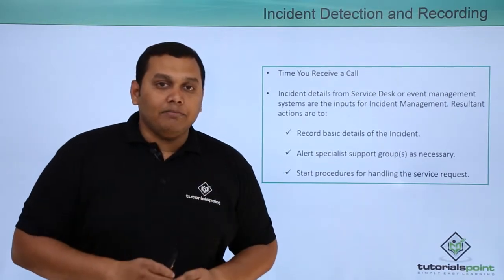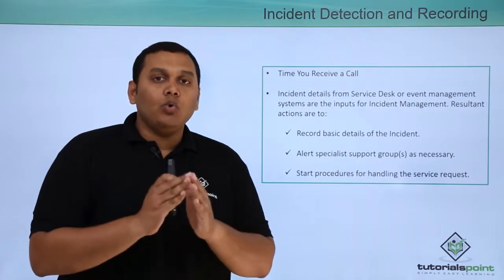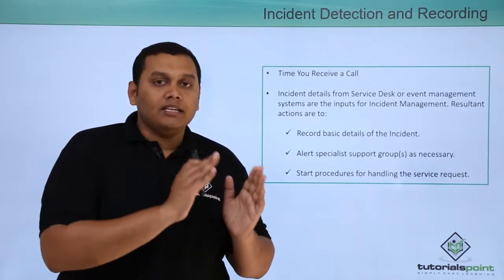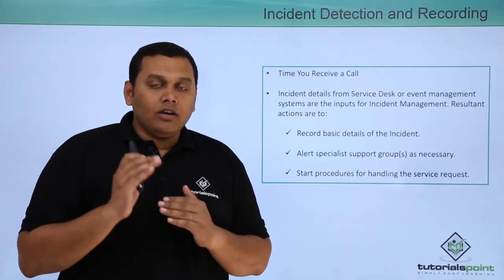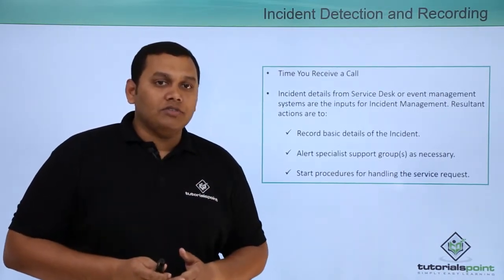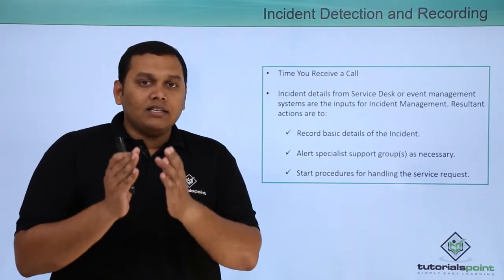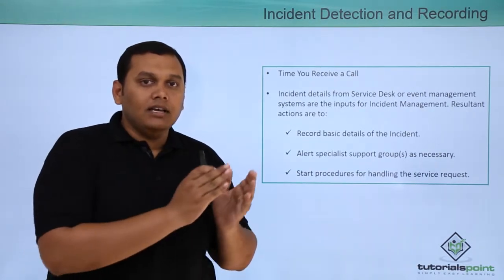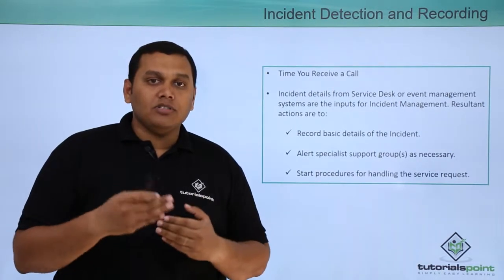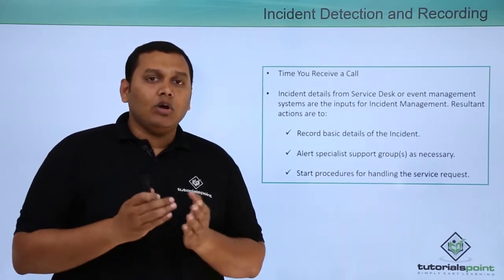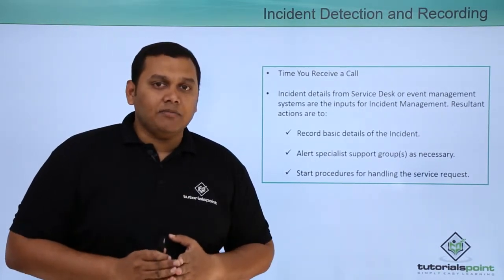Here we will talk about a small example. There are 4 to 5 new starters at one of the sites who are not able to access www.abc.com. So they call the service desk — all 4 or 5 people will call the service desk and log a ticket. Based on that, the service desk team categorizes the issue and forwards it to the incident management team based on the SLAs — response SLA and resolution SLA — and also based on priority, which means urgency plus impact.